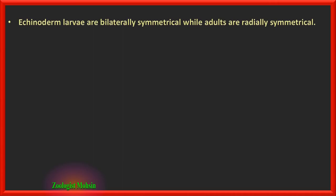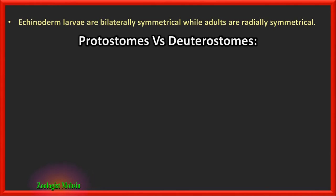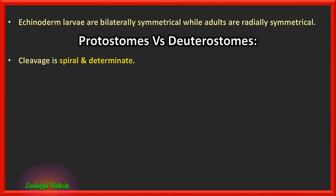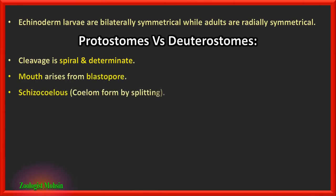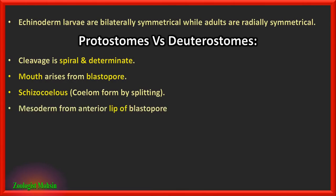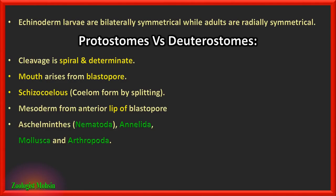A very important point to remember: echinoderm larvae are bilaterally symmetrical while adults are radially symmetrical. In protostomes, cleavage is spiral and determinate. The mouth arises first from the blastopore. Schizocoelous means the coelom is formed by splitting of the mesoderm layers; mesoderm forms from the anterior lip of the blastopore. The phyla among protostomes are nematodes, annelids, molluscs, and arthropods.